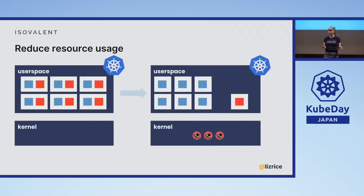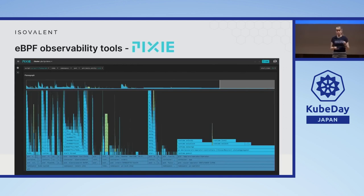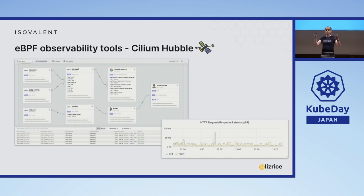Lots of tools have already been written that take advantage of eBPF and its power. Let's look at a couple of examples from the CNCF landscape. The first I'll mention is Pixie. This uses eBPF to collect metrics — all sorts of different metrics from all the nodes in your cluster — brings them together and presents them in various graphical ways. This is just one example of the kind of information you can get with Pixie. It's a flame graph showing CPU usage across an entire cluster.